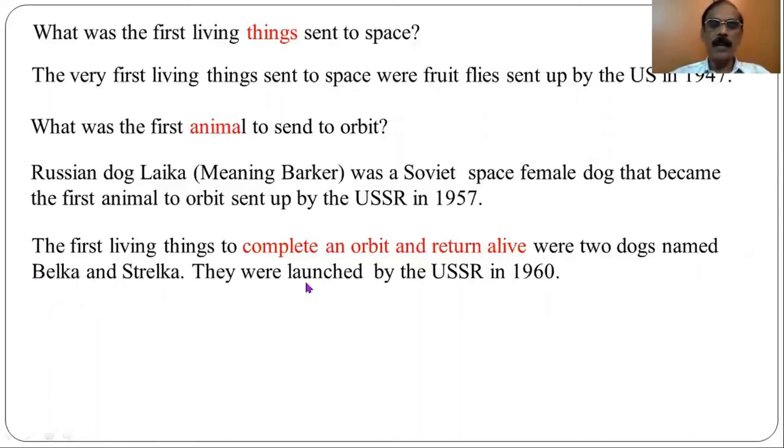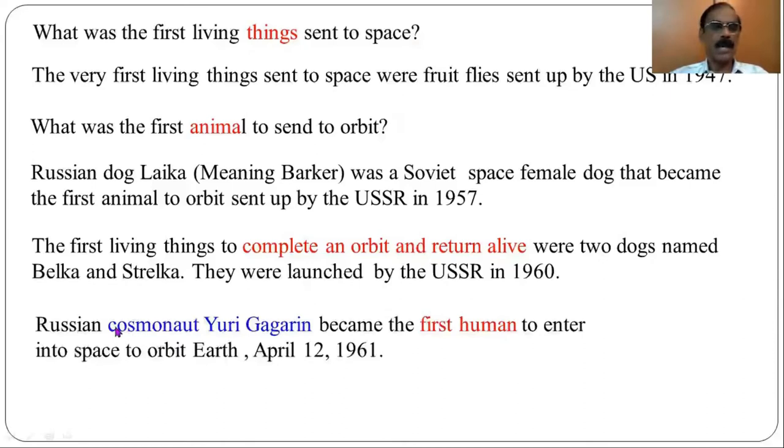They were launched by the USSR in 1960. Russian cosmonaut Yuri Gagarin became the first human to enter into space to orbit Earth in April 12, 1961.